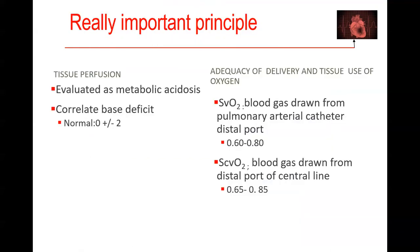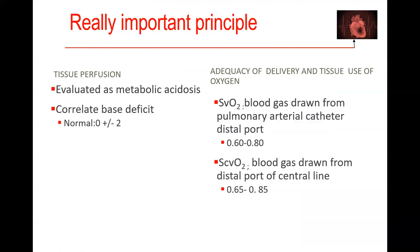Last but not least, from my point of view, the single most important thing is tissue perfusion, which is always evaluated as metabolic acidosis. In our clinical practice, we're going to correlate the base deficit. The purpose of your base is to buffer acid. Base buffers acid, and the acid it buffers is metabolic acid. So when metabolic acid goes up, it gets buffered by the base, and now the base in circulation goes down. That's why we look at base deficit.